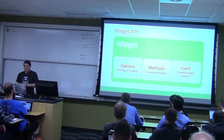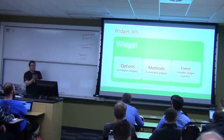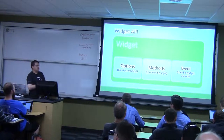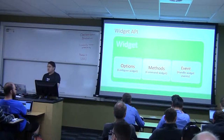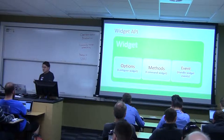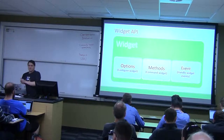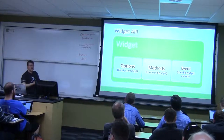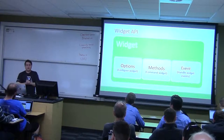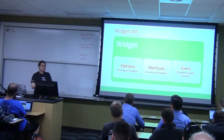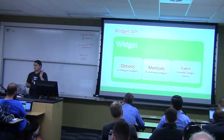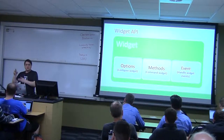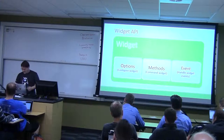When you look at a widget, there are things called options — you define these declaratively when you set up the widget. There are methods you call to do something, like hide or show. And there are events — what happens when something occurs, like when it shows a widget, what do you want it to do. You write JavaScript code to handle that sort of thing.